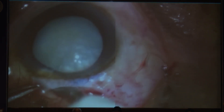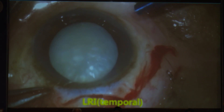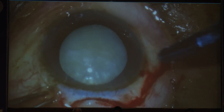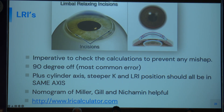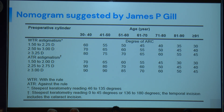We do not enter the anterior chamber during LRI. Typically 30 degrees — one clock hour — is the standard arc length for limbal relaxing incisions. The amount of astigmatism corrected can be calculated using nomograms; there are multiple LRI nomograms and an LRI calculator dot com to help determine how much astigmatism will be corrected. It is very important to check these calculations — a 90-degree axis error is the most common mistake. In younger patients a larger incision is needed; in older patients a smaller incision under 30 degrees suffices. One clock hour of paired incision corrects around one diopter of corneal astigmatism.